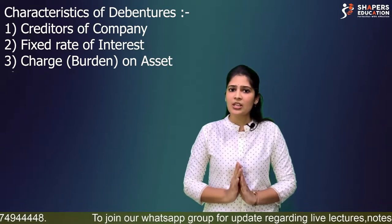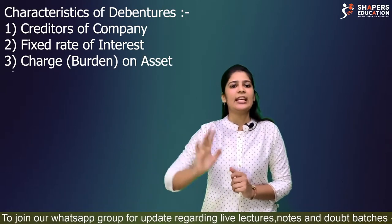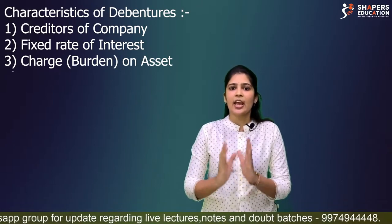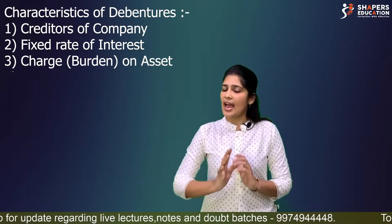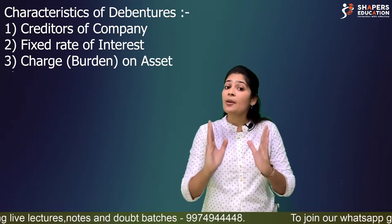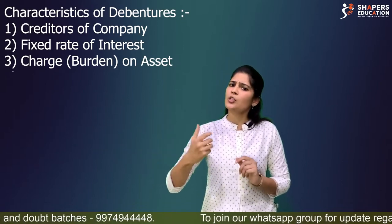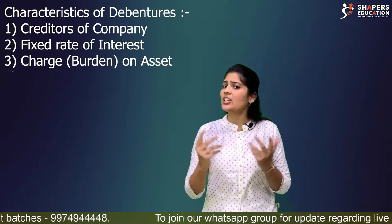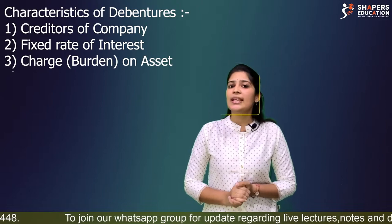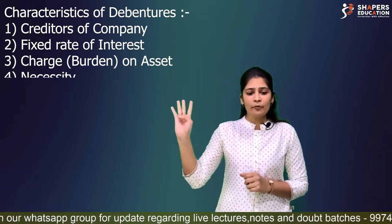The asset stays in the company's possession and the company can continue using it. The problem only arises after 10 years if the company fails to repay — then the debenture holders can sell the asset to recover their money. Also, charge on assets is not compulsory — if the company is in a good position, no charge on assets may be required.